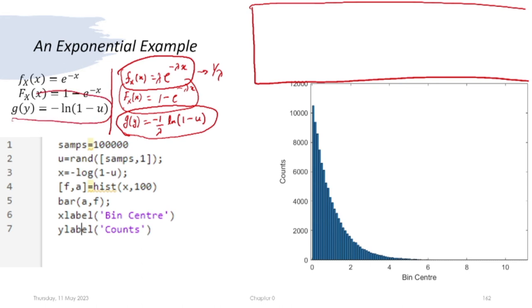For an exponential random variable with parameter λ = 1, the expressions are given here. Let us now quickly try to write these as a MATLAB program and simulate this.